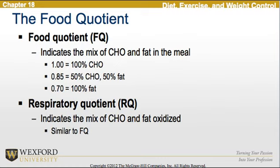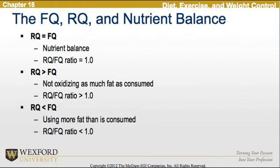Looking at the food quotient, this indicates the mix of carbohydrates and fat in the meal: 1.0 would be 100% carbohydrate, 0.85 would be 50% carbohydrate and 50% fat, and 0.7 would be 100% fat. This is similar to the respiratory quotient, which indicates the mix of carbohydrates and fats being oxidized. When the RQ equals the FQ, there is nutrient balance. If the RQ is greater than the FQ, the RQ-to-FQ ratio is greater than 1, meaning we are not oxidizing as much fat as is consumed. Conversely, if the RQ is less than the FQ, the RQ-to-FQ ratio is less than 1, meaning we are utilizing more fat than is consumed.